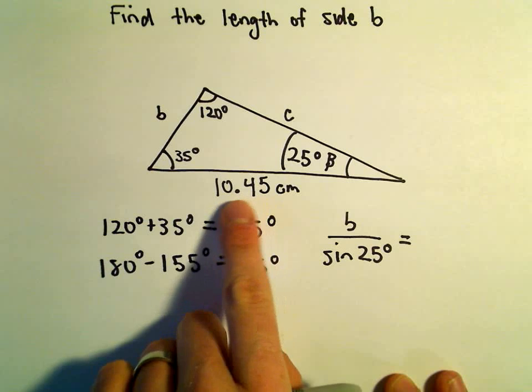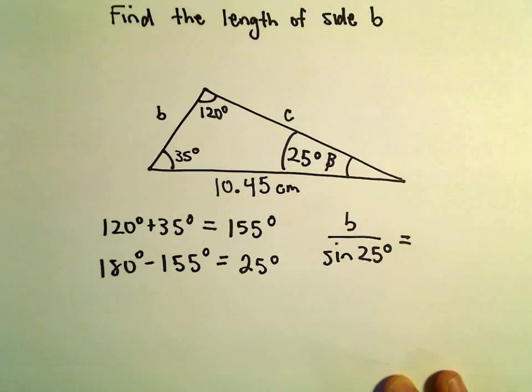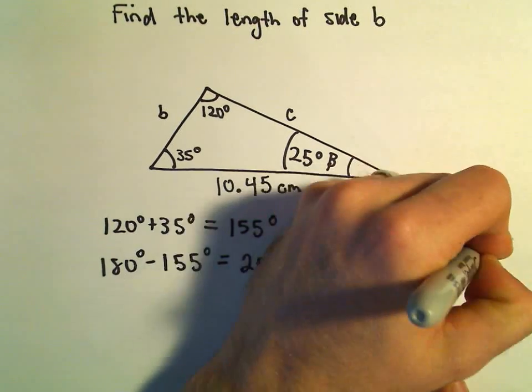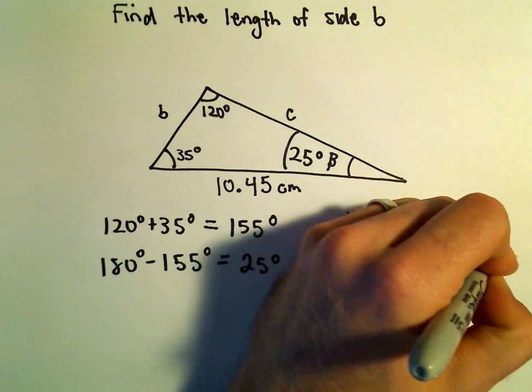The only side length we're given is the 10.45, so I'm going to use the 10.45 and the 120 degrees, so we'll have 10.45 over sine of 120 degrees.